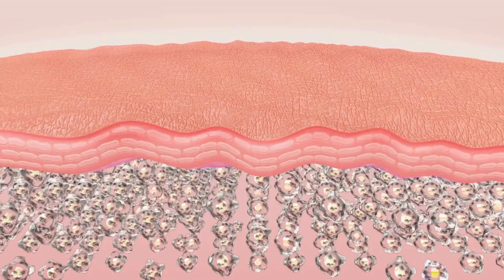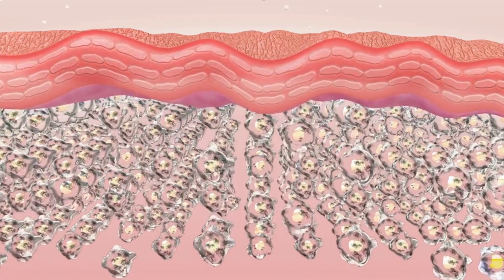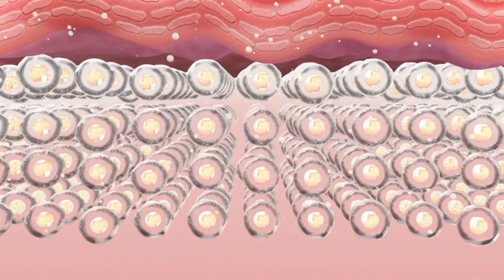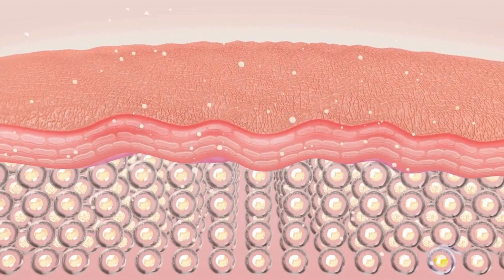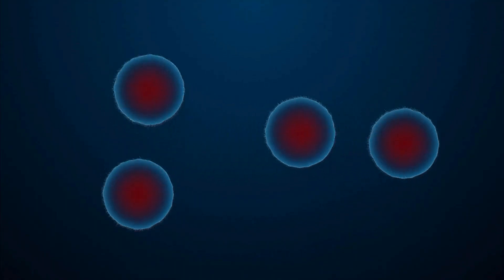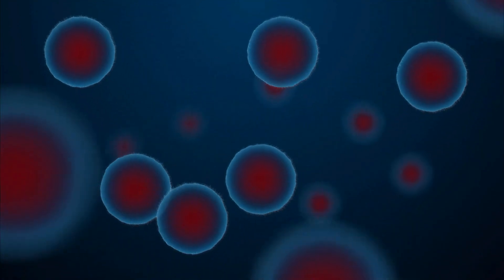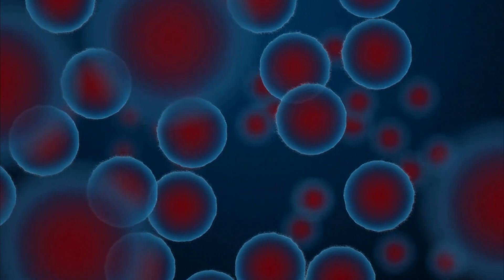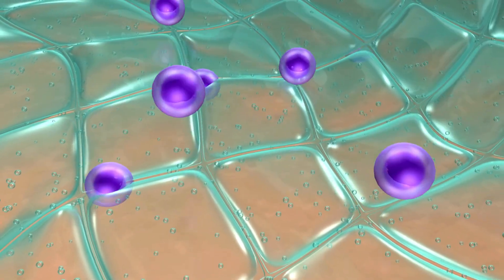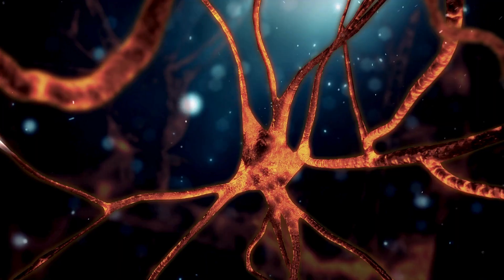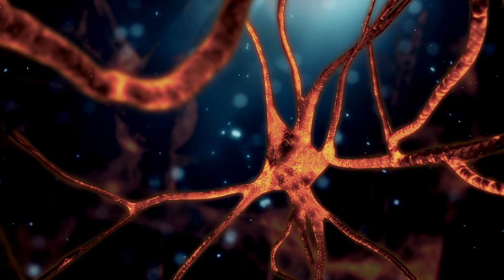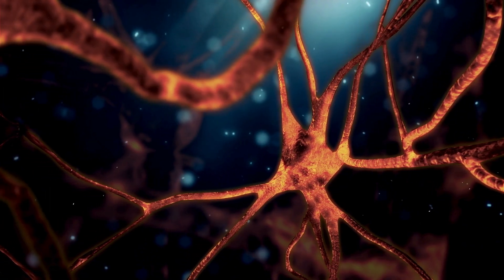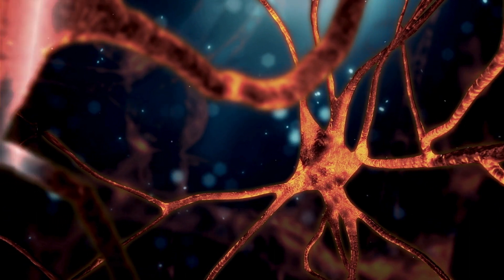Tissue regeneration primarily occurs through two main mechanisms: mitosis of existing cells and the activity of stem cells. Mitosis involves the division of existing cells to produce new cells, allowing for the replacement of damaged or lost tissues. This process is particularly prominent in the skin and epithelial tissues lining the surfaces of organs. However, many other tissues in the human body have limited mitotic ability or lack the capacity for mitosis altogether.